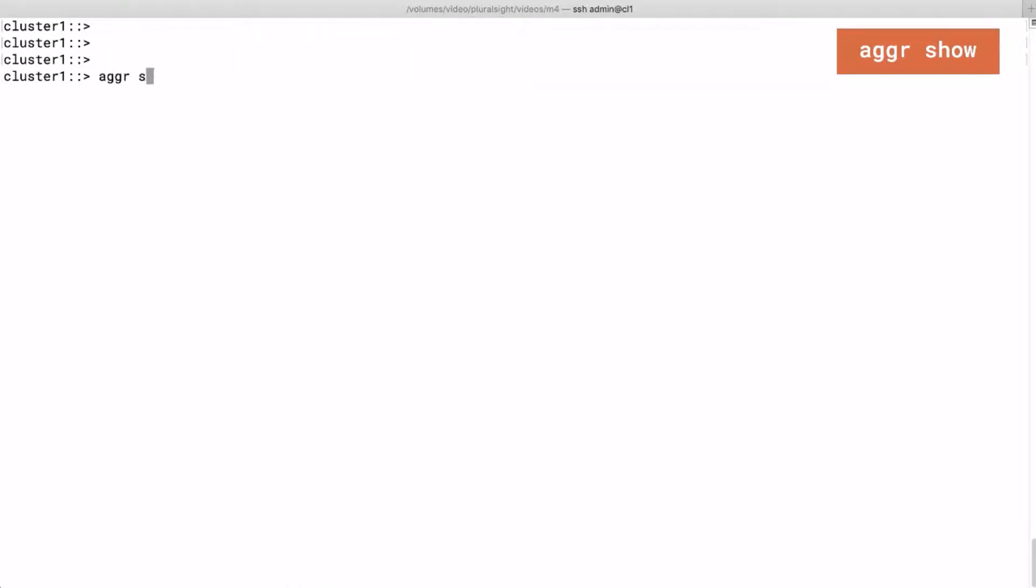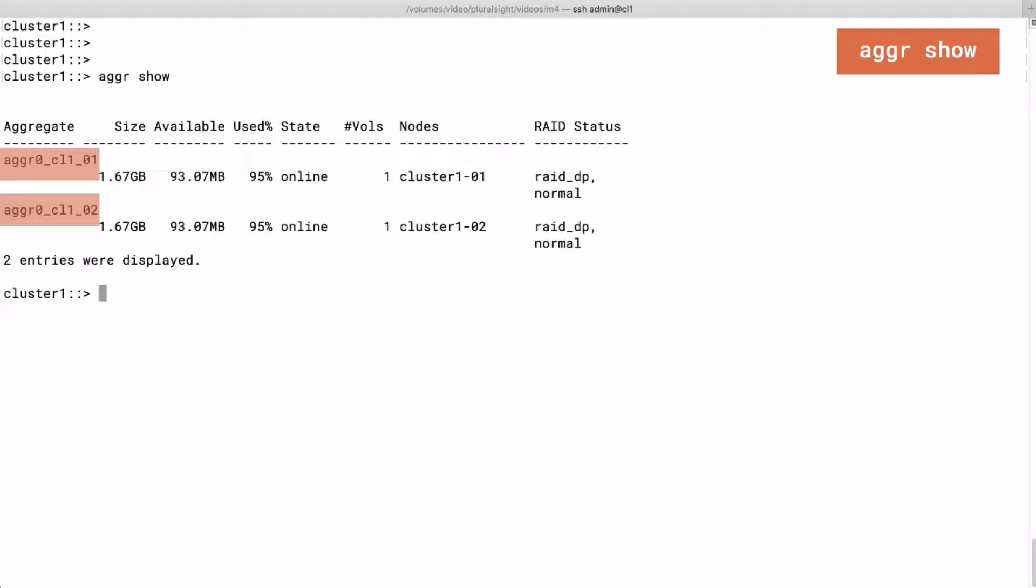To view the aggregates that belong to a node you can run agr show. This command will list all the aggregates in a cluster. So if you for example have a single node it will list all the aggregates of that single node, and if you have multiple nodes in your cluster then it will list all the aggregates of the current nodes.